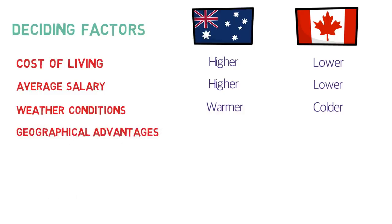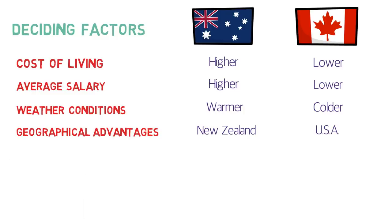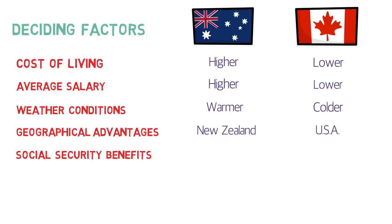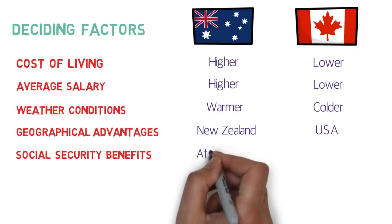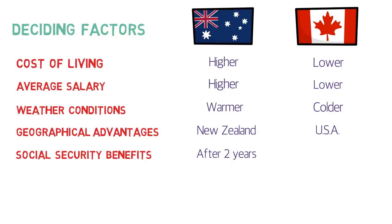Regarding geographical advantages, Australia enjoys proximity to New Zealand while Canada is close to the USA, which is a great advantage for people working in IT and other sectors. As an Australian permanent resident, moving to or working in New Zealand is much easier. As a Canadian permanent resident, working in the USA requires an H-1B visa, though it becomes easier once you become a Canadian citizen. Also, social security benefits like sickness and unemployment wages are available immediately in Canada, but only after two years as a permanent resident in Australia.